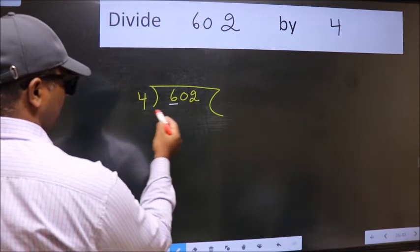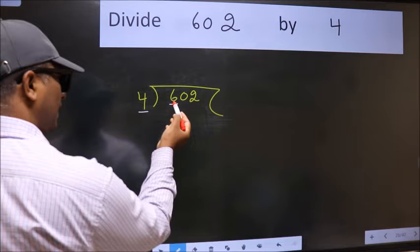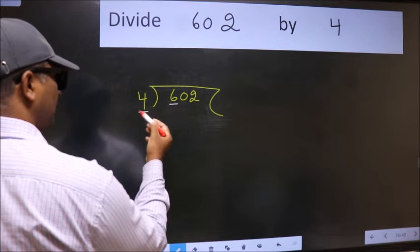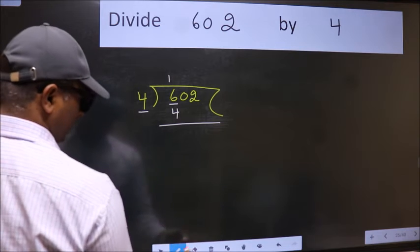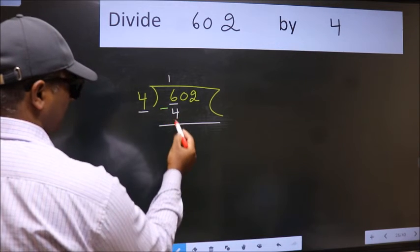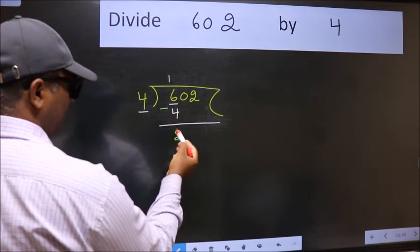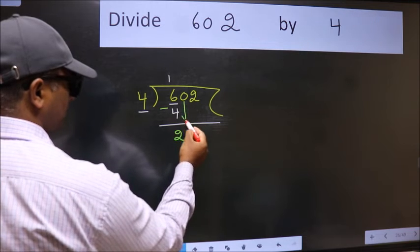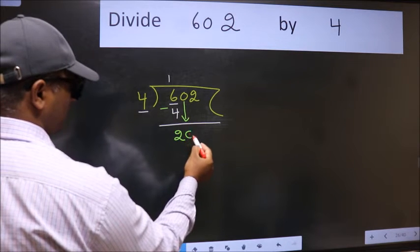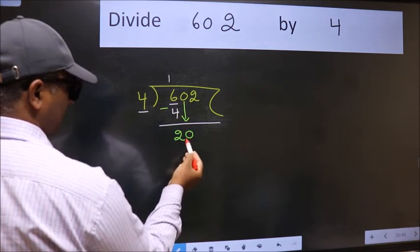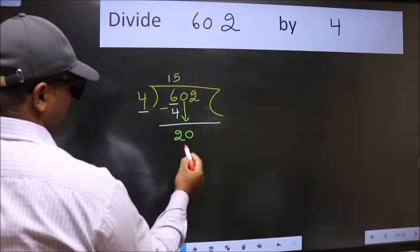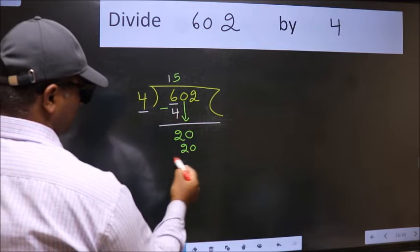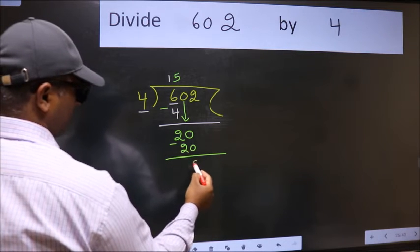Here we have 6 and here 4. A number close to 6 in the 4 table is 4 once 4. Now we should subtract. We get 2. After this, bring down the beside number. So 0 down, so 20. When do we get 20 in the 4 table? 4 fives 20. Now we subtract. We get 0.